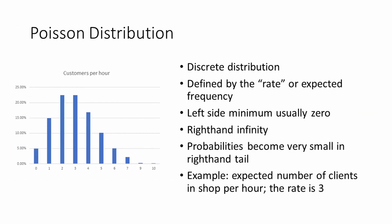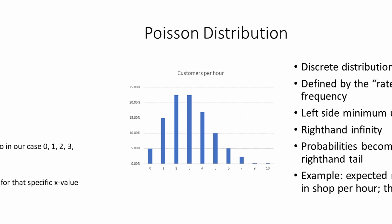Let's take a closer look at this Poisson distribution. This probability density function counts the rate of events — for instance, the expected number of clients per hour, the number of defaults in a production batch, the number of spelling errors on a page, and so on. Here we see an example of a Poisson distribution for the expected number of clients in a shop, where the rate is 3. We see that this is a discrete distribution. In most cases the lower limit equals 0, while at the right-hand side there is no limit. However, from the example we see that the probability of having more than 10 clients in an hour is small.